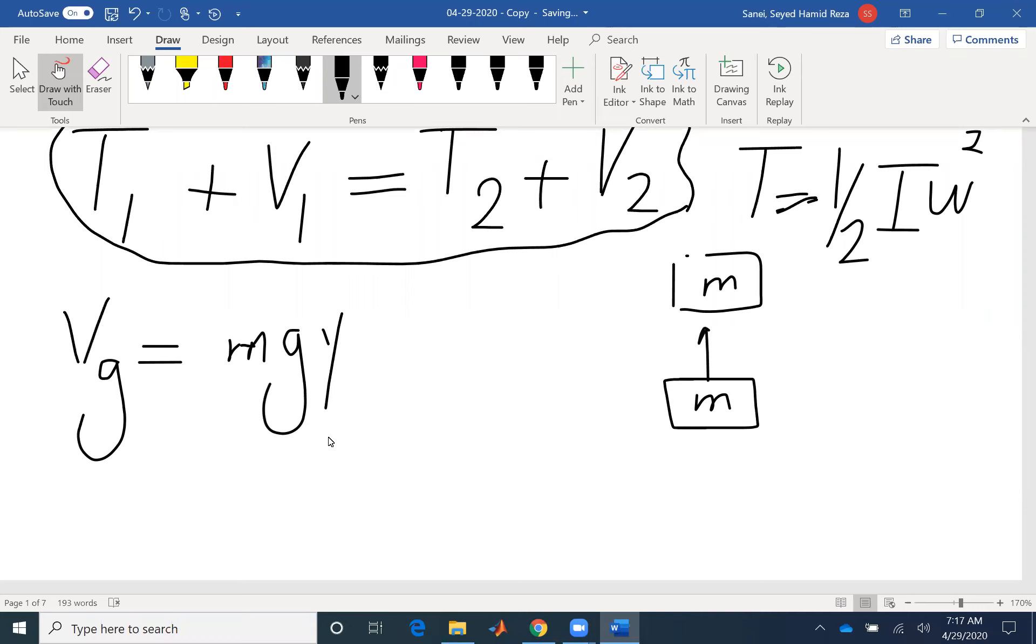And if you have two positions, it's better to set your coordinate system in one position. So you can say that the potential energy for the initial position is zero and the potential energy for the final position would be mg y. It would simplify your problem.